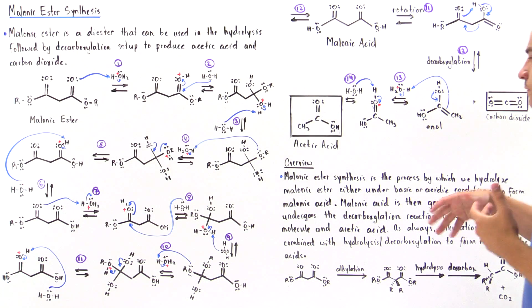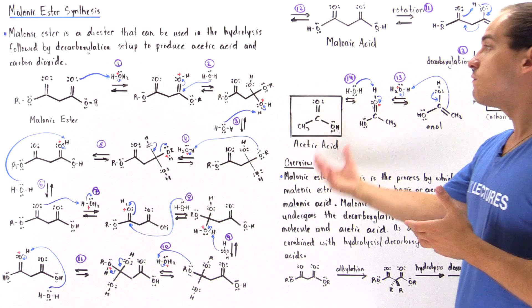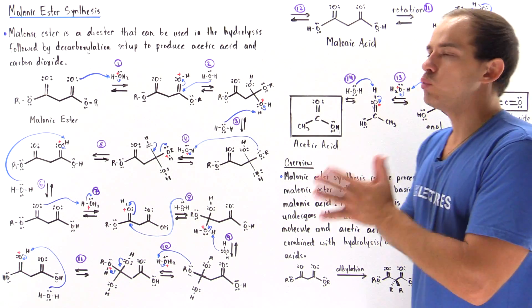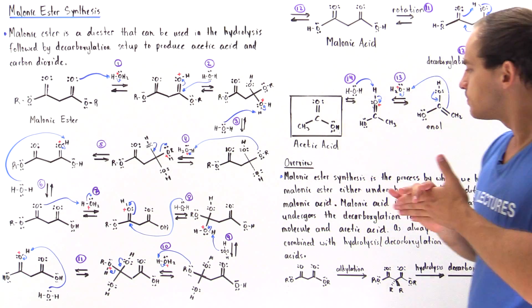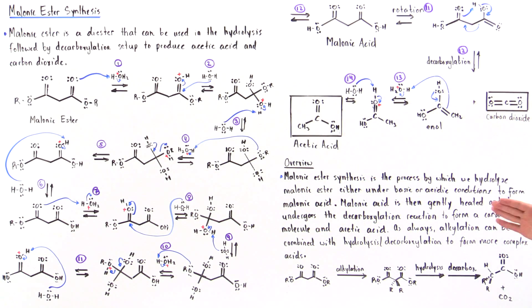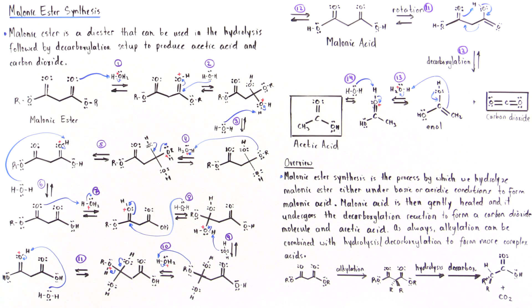In summary: malonic ester synthesis is the process by which we hydrolyze malonic ester, either under basic or acidic conditions, to form malonic acid. Malonic acid is then gently heated and undergoes the decarboxylation reaction to form carbon dioxide as well as acetic acid.